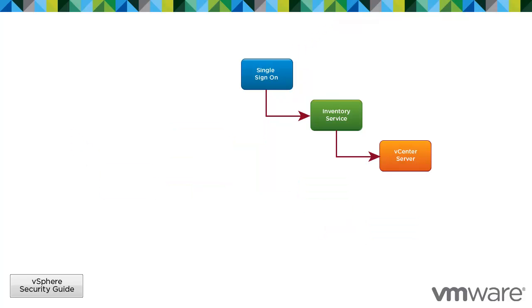When you upgrade to vCenter Server 5.1, the upgrade process installs vCenter Single Sign-On first and then upgrades vCenter Server. For more information about configuring vCenter Single Sign-On, see the vSphere Security Guide.